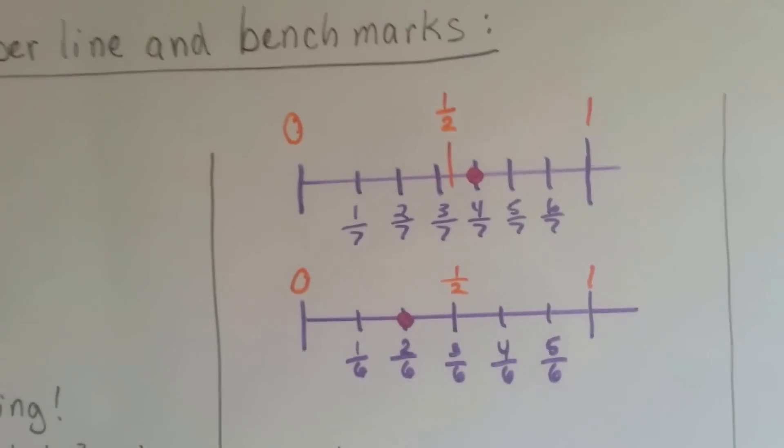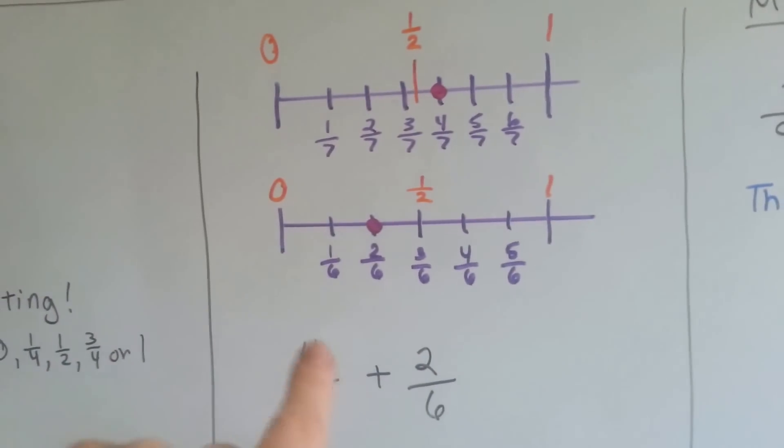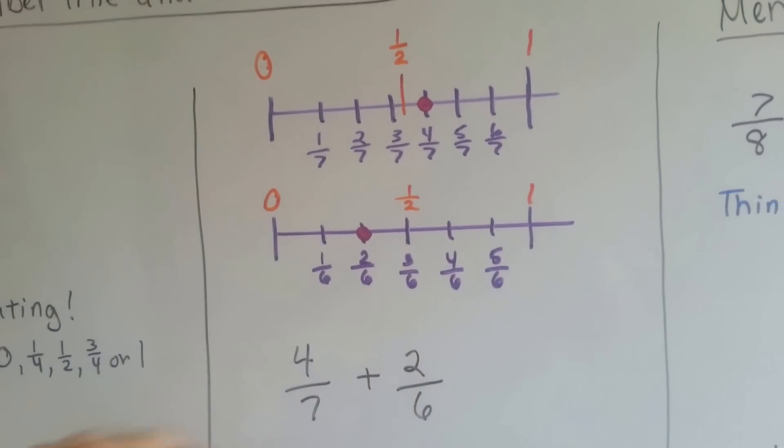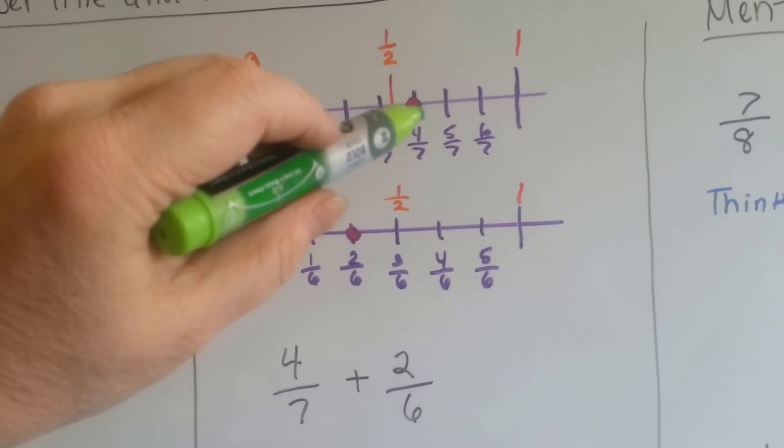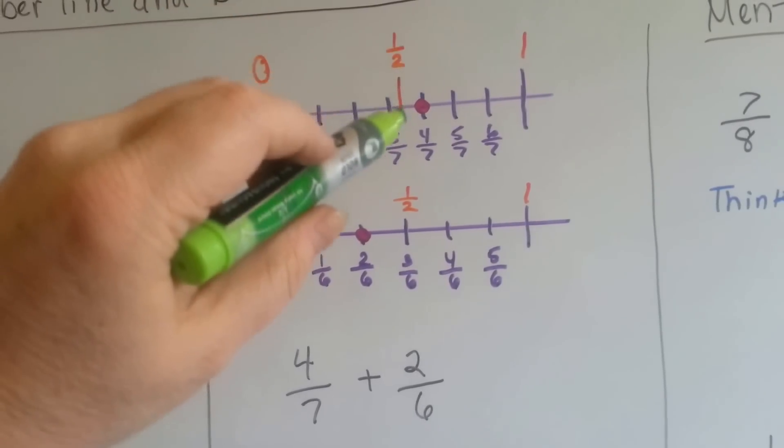If we wanted to use the benchmarks 0, half, and 1, and we wanted to add 4 sevenths plus 2 sixths, we would place our dot at the 4 sevenths mark and see that it's closer to the half benchmark, so that's going to be our first rounded number.